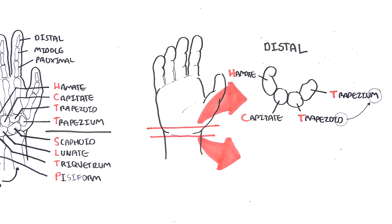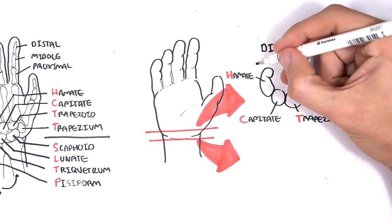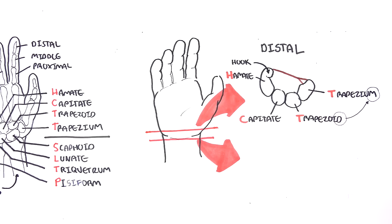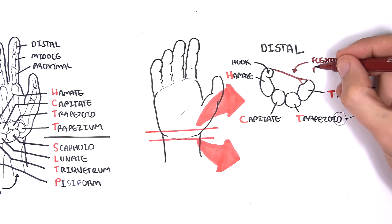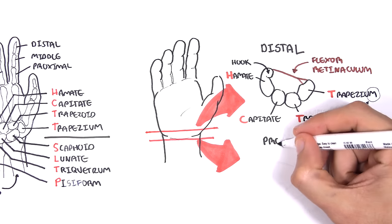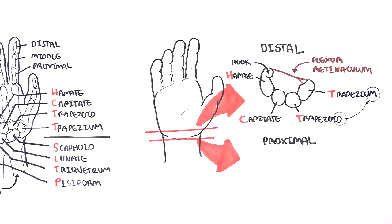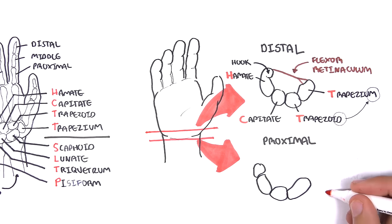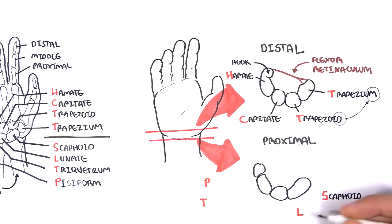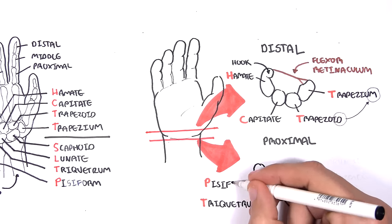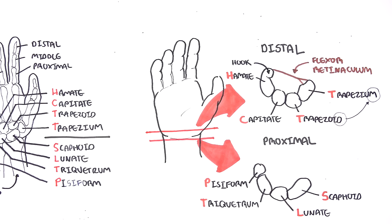The hamate has a hook, and traveling across the hamate and the trapezium is the flexor retinaculum. The flexor retinaculum is a very important structure to remember. Now let's look at the proximal four carpal bones: S is for scaphoid, L for lunate, T for triquetrum, and P for pisiform.